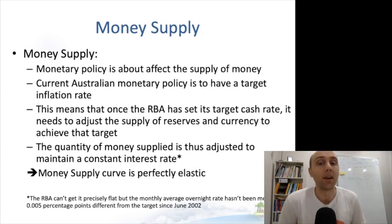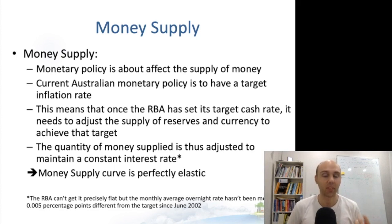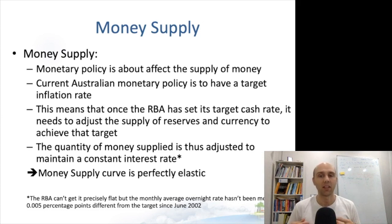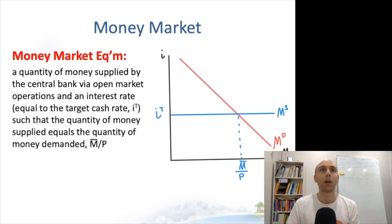What about money supply? Current Australian monetary policy — as set by most economies around the world — involves having a target inflation rate, which means the RBA needs to adjust the supply of reserves very quickly to achieve that target. So the RBA is adjusting the quantity of money supply through the channel system to maintain a constant interest rate. If we've got a constant interest rate, we have a horizontal line at whatever that target interest rate is — meaning the money supply curve is perfectly elastic. The equilibrium is the intersection of supply and demand, just as in basic microeconomic models.